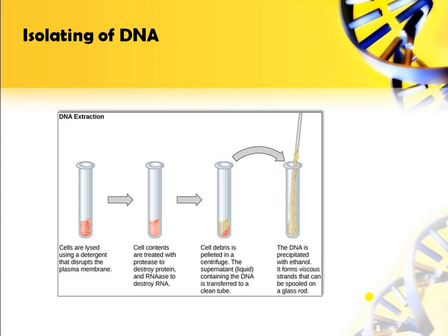Two types of treatment are used: first, the enzyme protease for removal of protein, and then RNase for removal of RNA. These enzymes react with the cell contents and settle at the bottom of the tube after centrifugation. The supernatant liquid containing the actual DNA fragment is transferred to another tube. The DNA is then precipitated with ethanol, forming a viscous strand that can be spooled on a glass rod.